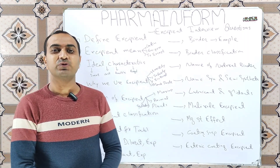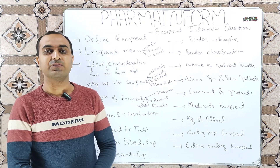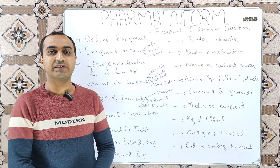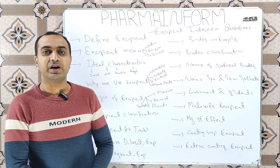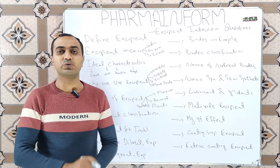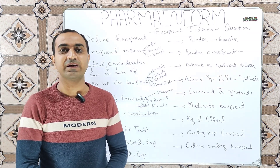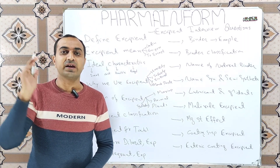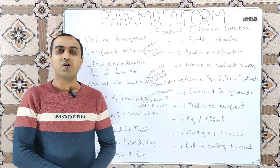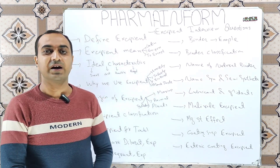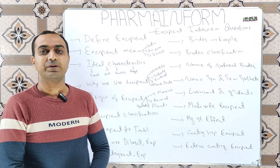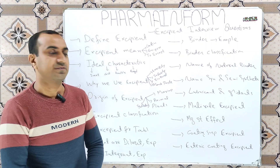The next question is: why do we use excipients? Excipients are used for many reasons, but the main reason is to manufacture our drug delivery system. They are used to enhance the bioavailability and solubility of the drug product, to enhance stability and provide protection from oxidation, to mask unpleasant taste, and to help in product identification by using different colorants.